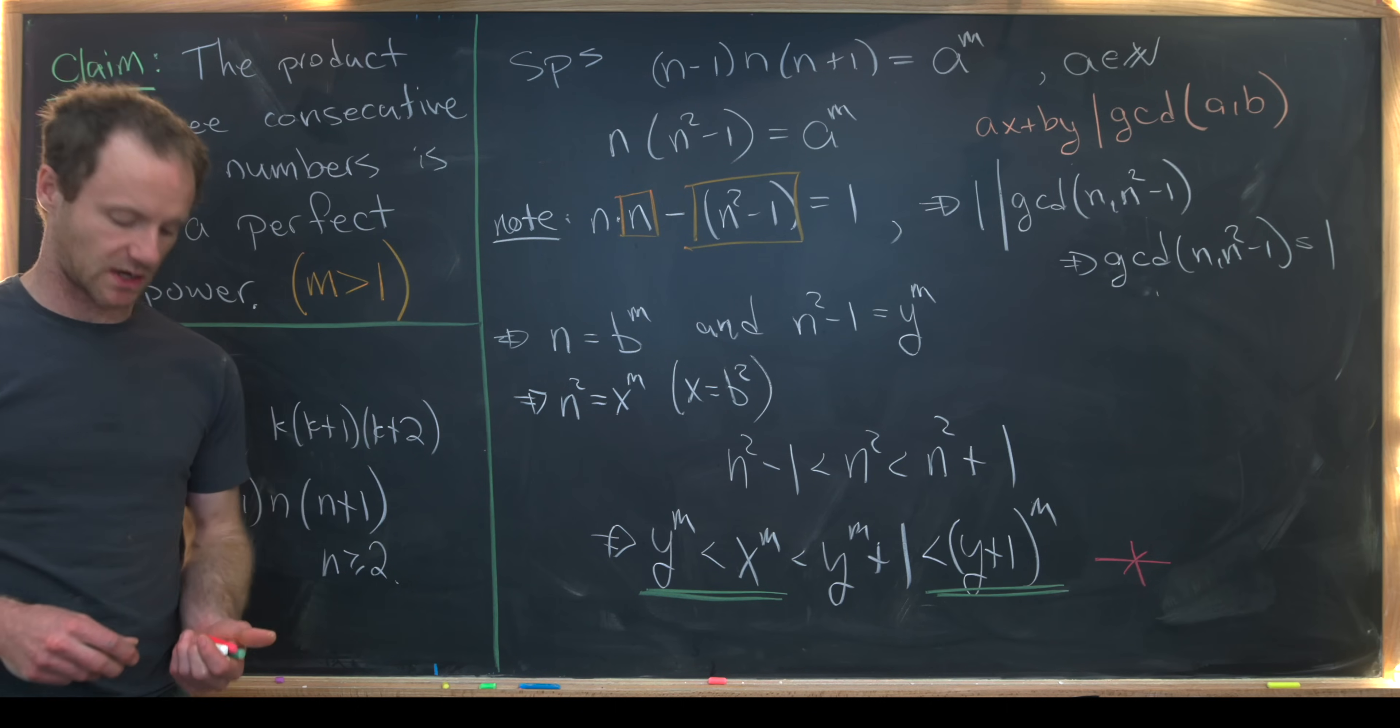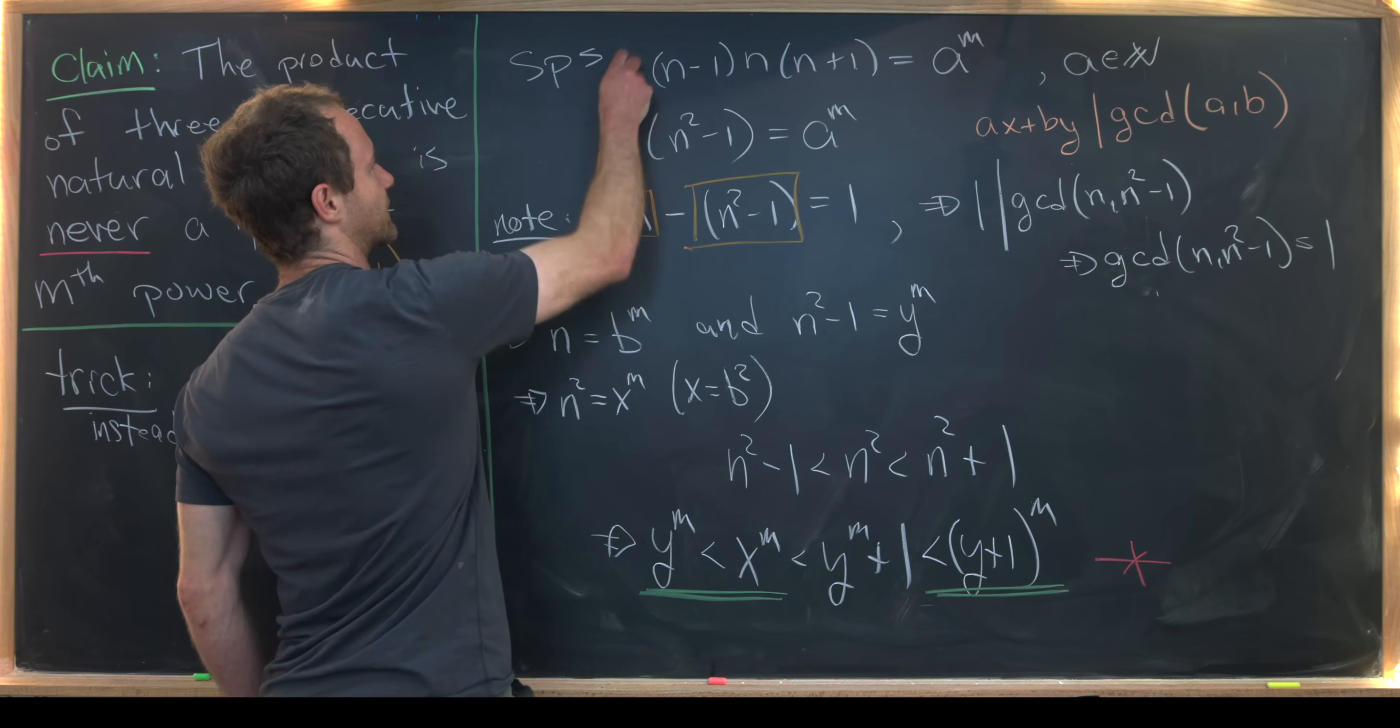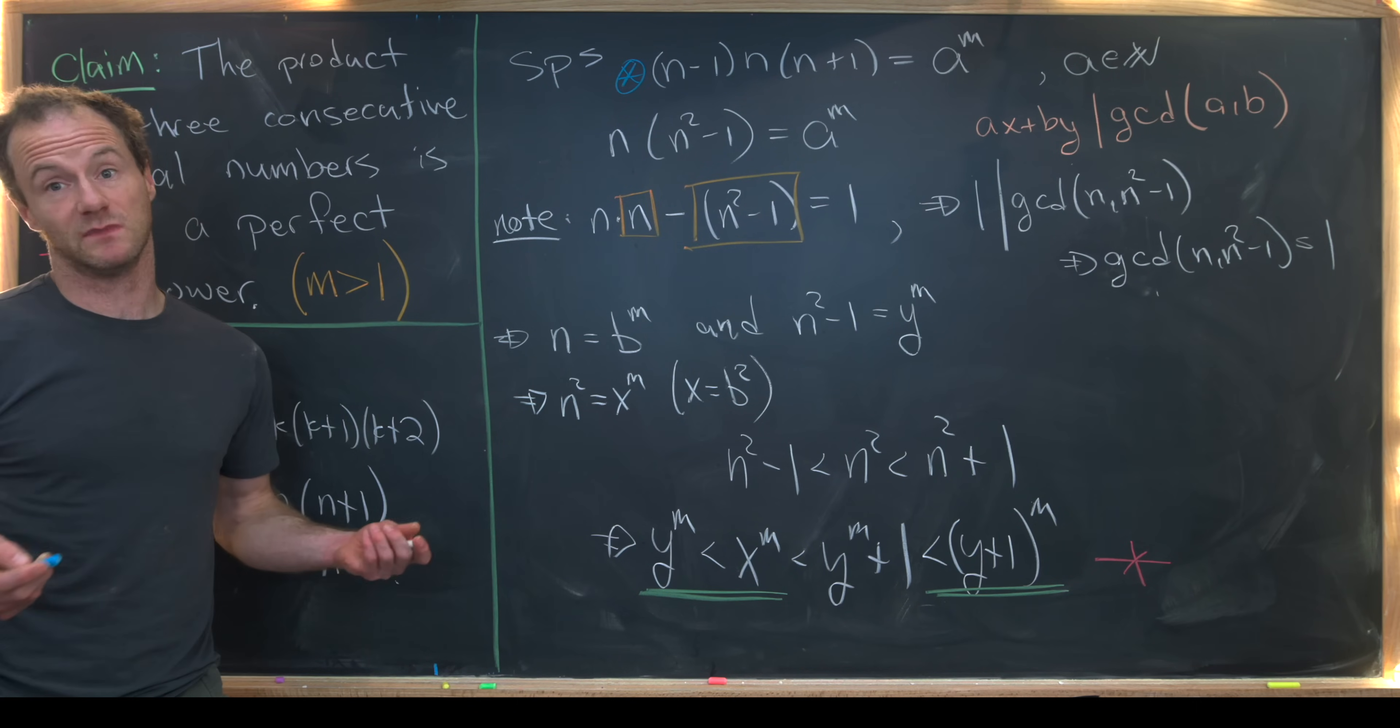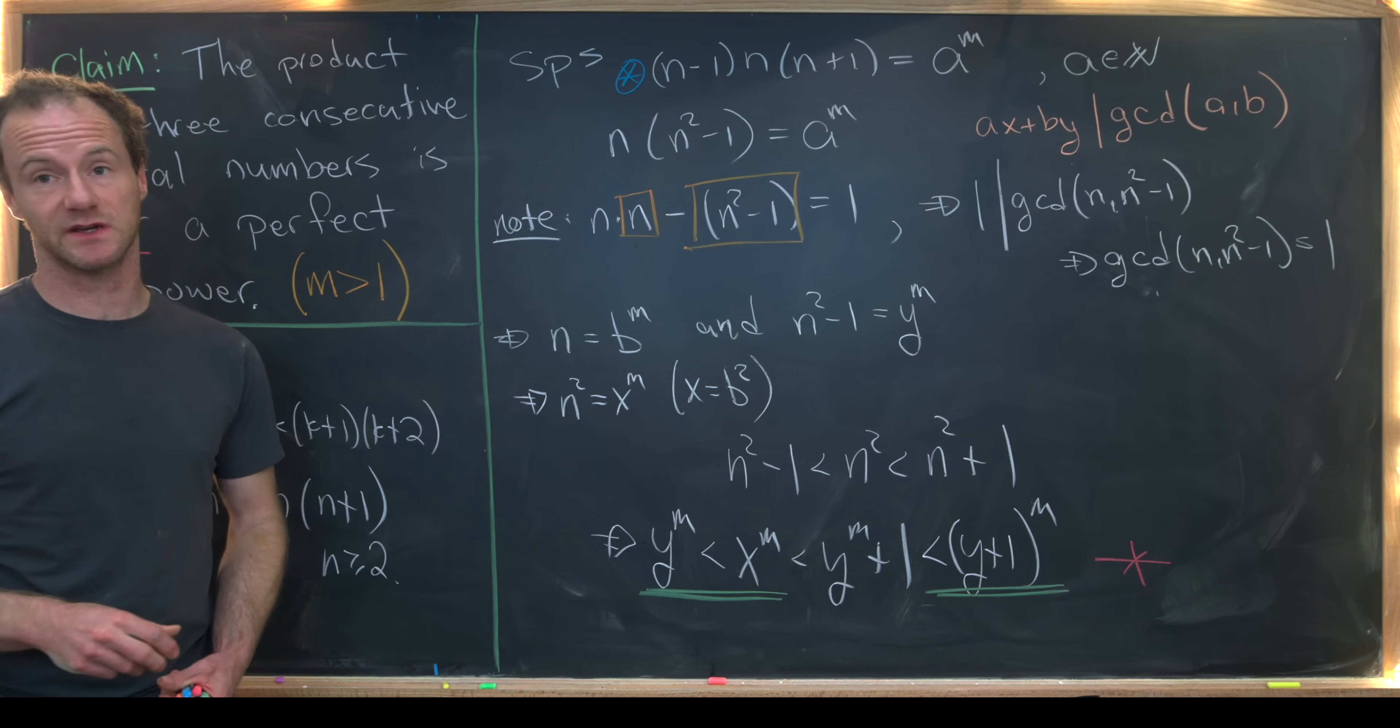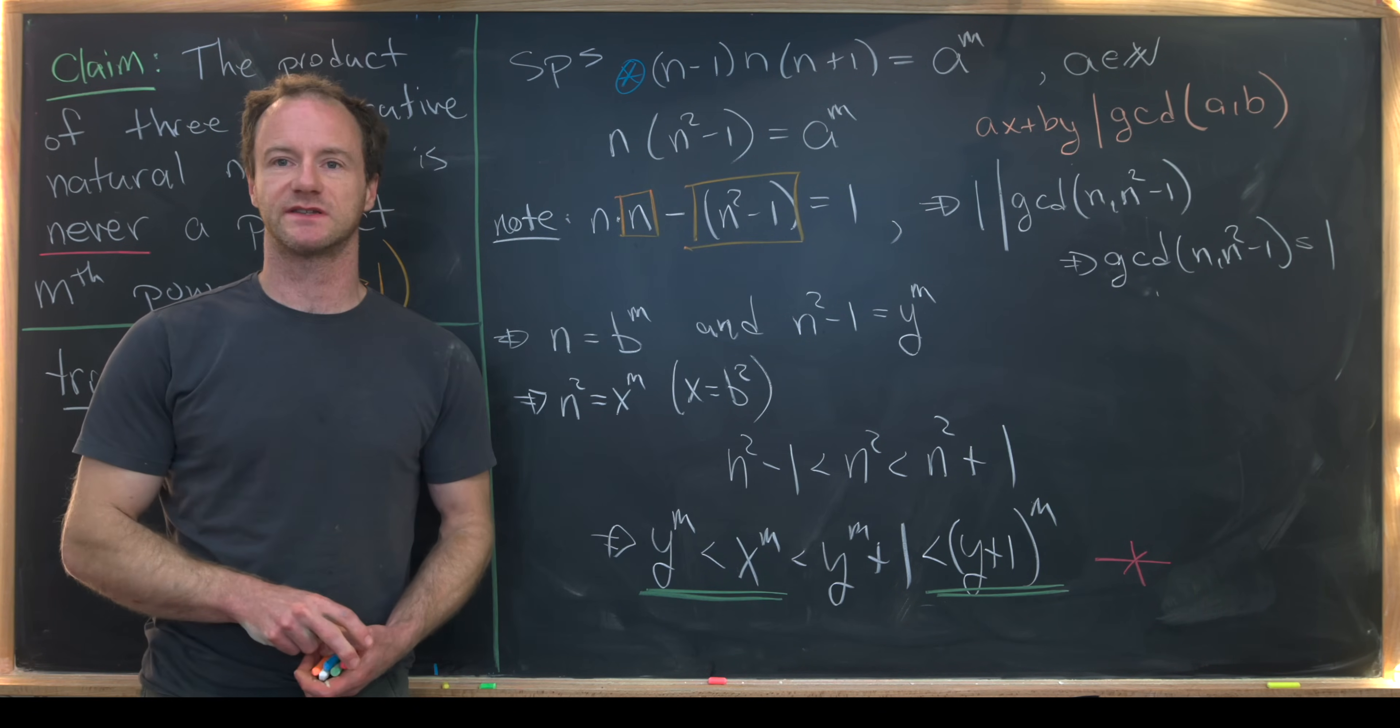So what did we contradict? Well, we contradicted that we had a solution in the first place way up here. So that means we must not have a solution in the first place, which means this claim is proven. And that's a good place to stop.